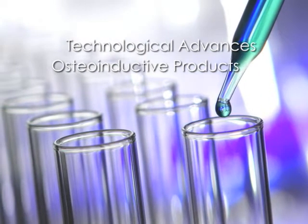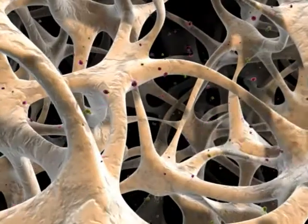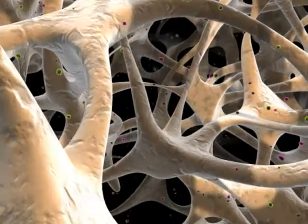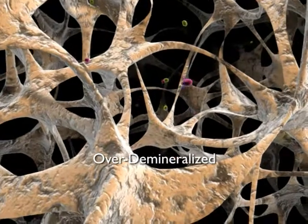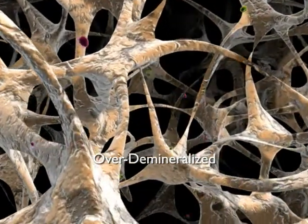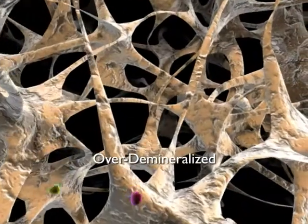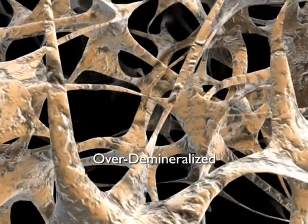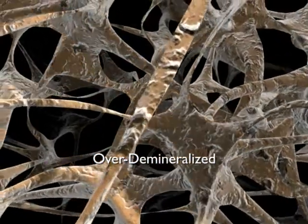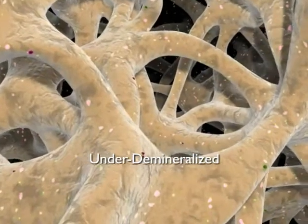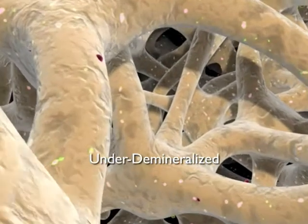The percent of demineralized matrix left intact after demineralization is fundamental to achieving optimal osteo induction. When the bone matrix is over demineralized, acid used during the process denatures or removes the growth factors trapped within it. This results in lower levels of active growth factors and proteins, and therefore lower osteo inductive potential. If tissue is under demineralized, growth factors trapped within the matrix are not fully exposed.